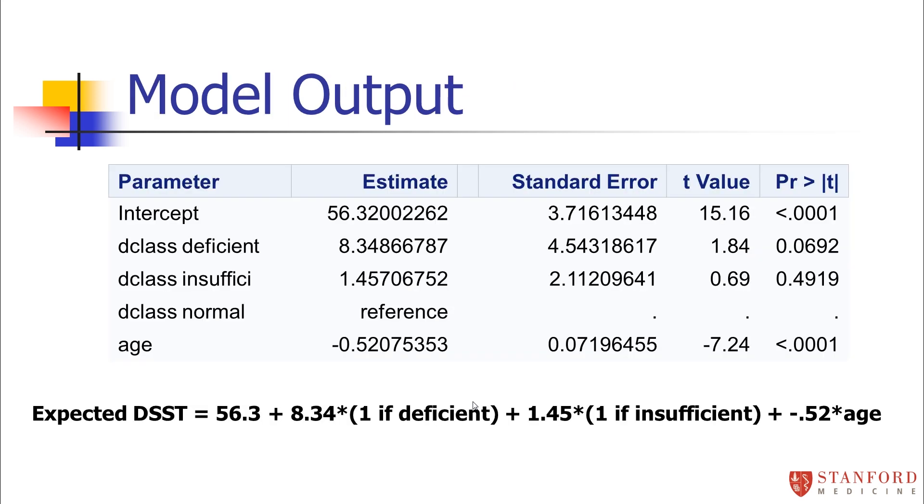And here's the model that comes out when I add age to the model. So it's showing me that, again, the normal group is the reference group, so it doesn't get a beta coefficient. Now, I get an effect for age. And now, I get what are age-adjusted beta coefficients. These have now been adjusted for age.